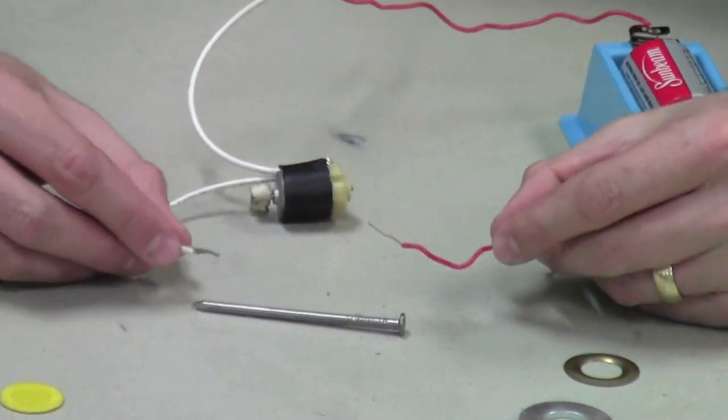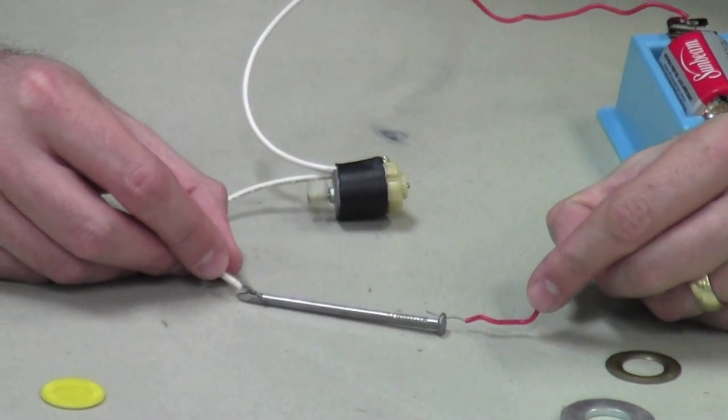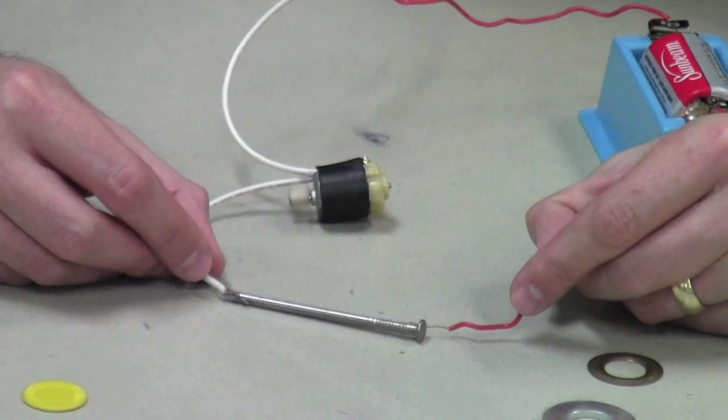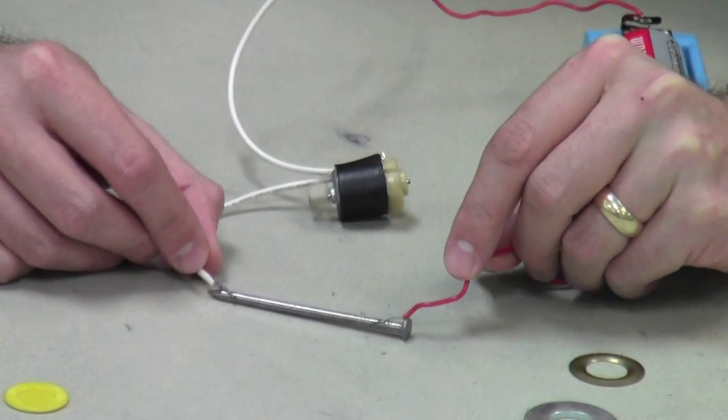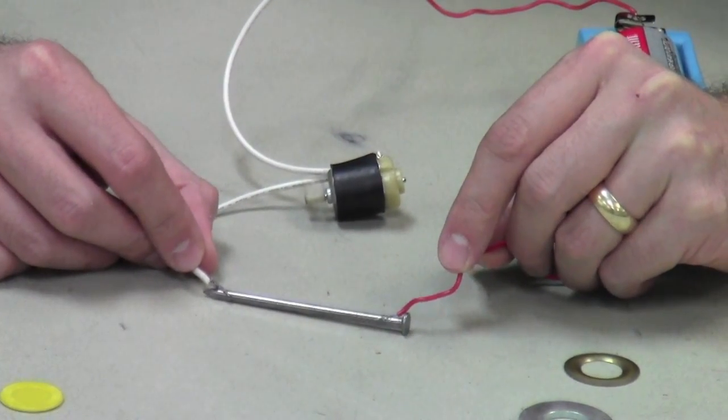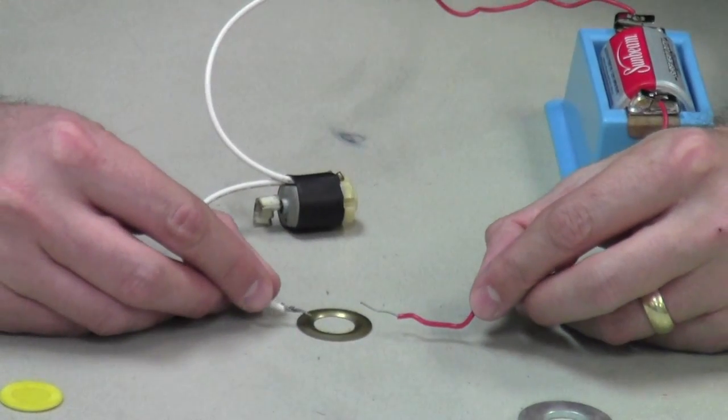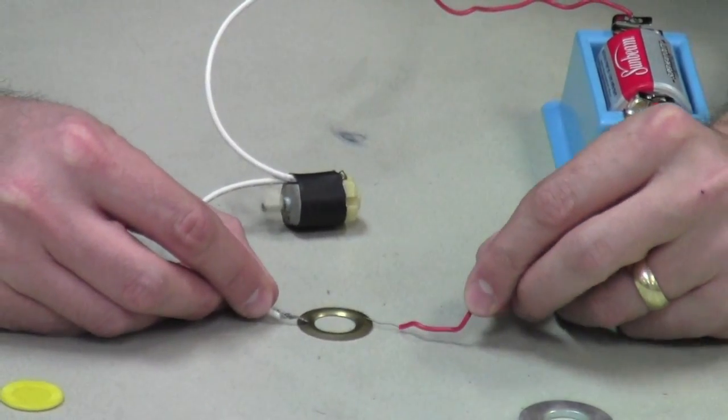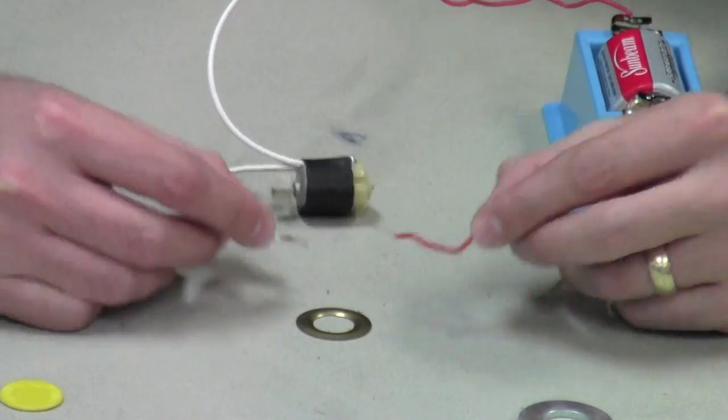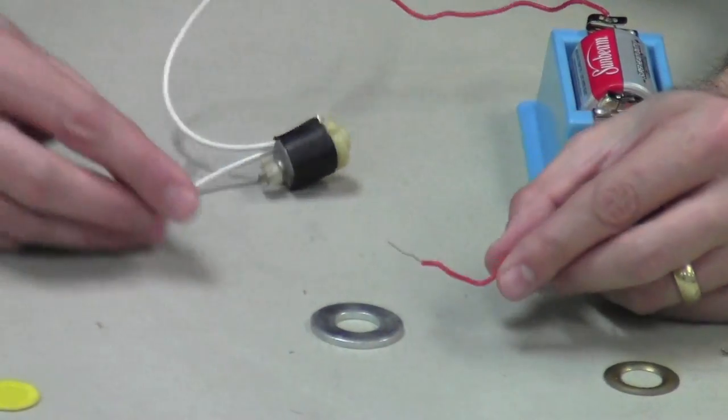Same thing is true with a steel nail. If I connect a steel nail into the circuit, it again will allow the electrical energy to flow through. A brass grommet does the same thing. And finally, a metal washer.